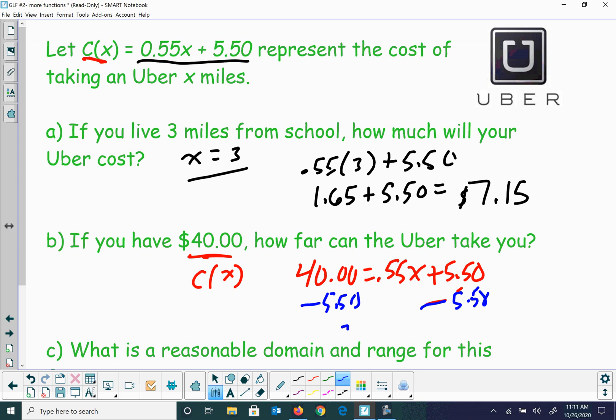That's going to give me 34.50 equals 0.55x, so then I'll divide each side by 0.55, and it looks like I can go 62.73 miles if I round it up. That's pretty far.